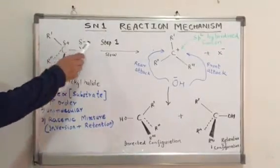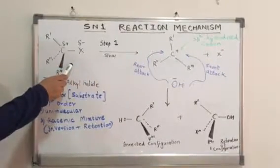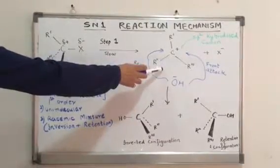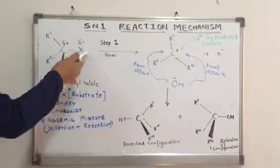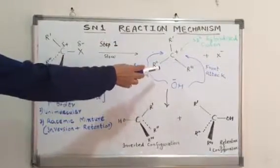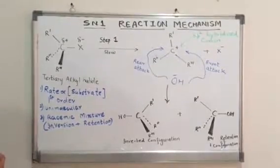Hence, the first step, which would be slow because it is resulting from a stable neutral molecule to a charged intermediate. We have the halide ion leaving the substrate molecule to give us an intermediate over here, where carbon carries a positive charge.